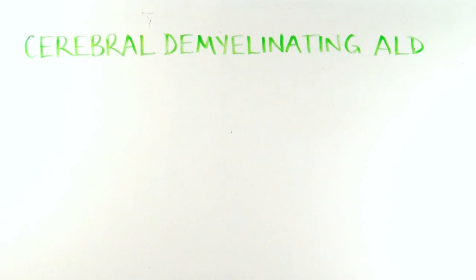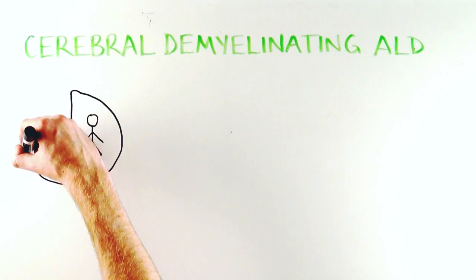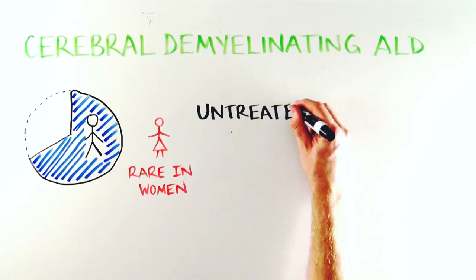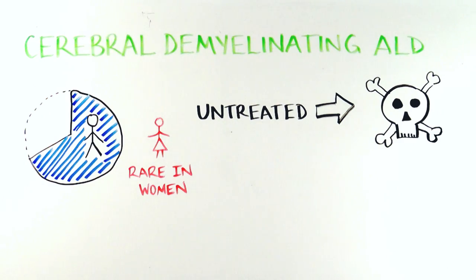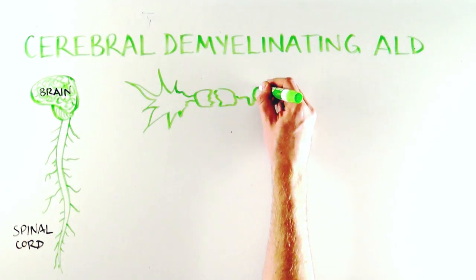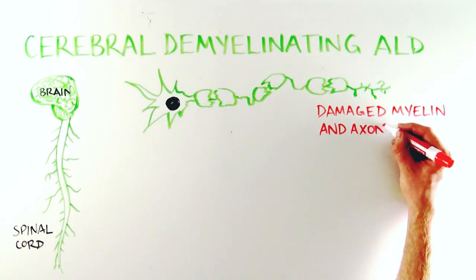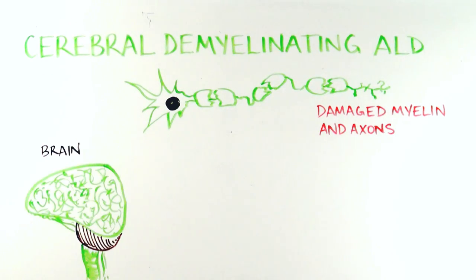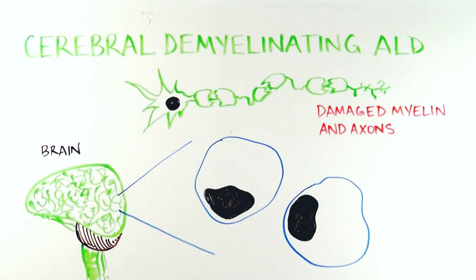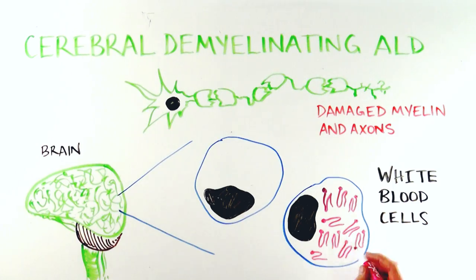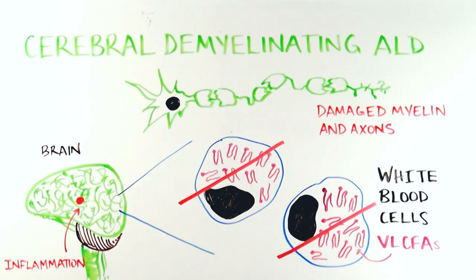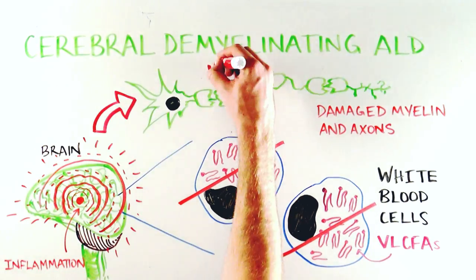The most dreaded symptom of ALD is cerebral demyelinating ALD, or cerebral ALD. About two-thirds of men with ALD will experience cerebral ALD. It is very rare in women. This is the most devastating of all ALD symptoms, and is lethal unless it is promptly diagnosed and treated. The biology underlying cerebral ALD is similar to AMN in that it damages myelin and axons. However, whereas AMN progresses slowly and affects the spinal cord and nerves, cerebral ALD progresses much more rapidly and affects the brain. The damage to axons in cerebral ALD appears to originate with dysfunction of white blood cells in the brain, which become injured when VLCFAs accumulate. This leads to massive inflammation that typically starts near the center of the brain and radiates outward, damaging the brain's myelin, axons, and eventually the neurons.